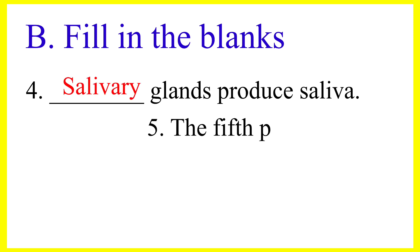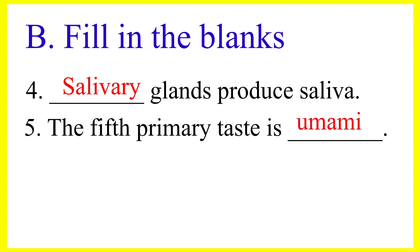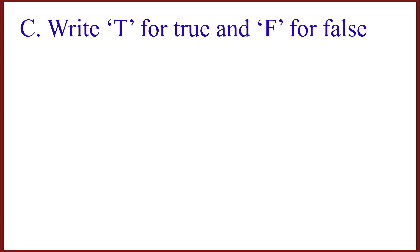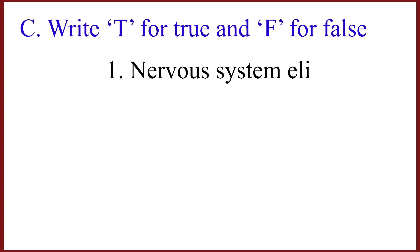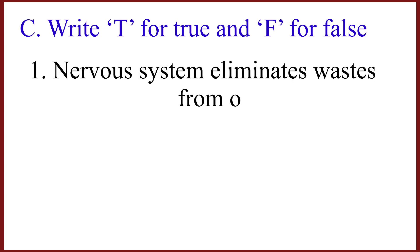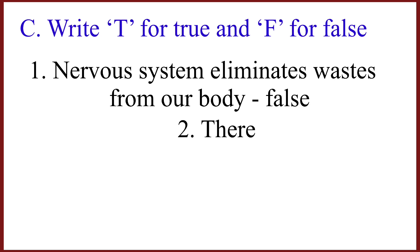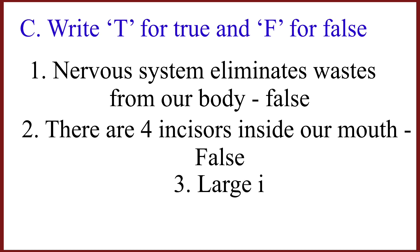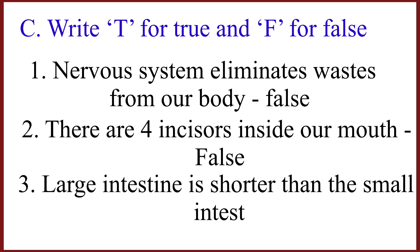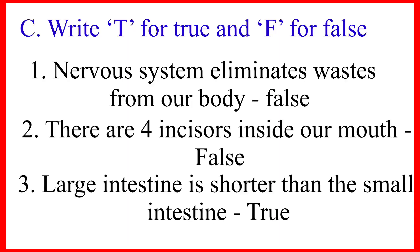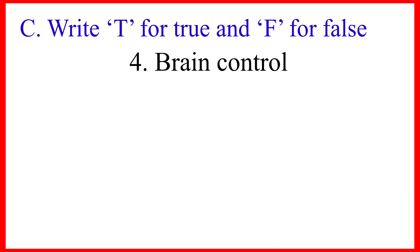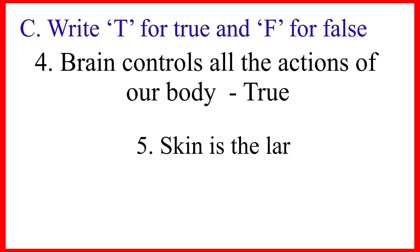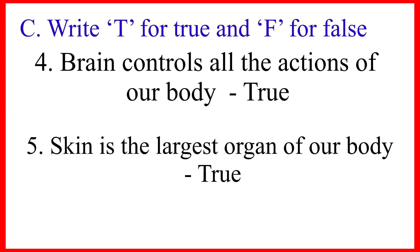The fifth primary taste is umami — True. T for true and F for false. Nervous system eliminates waste from our body — False. There are four incisors inside our mouth — False. Large intestine is shorter than the small intestine — True. Brain controls all the actions of our body — True. Skin is the largest organ of our body — True.